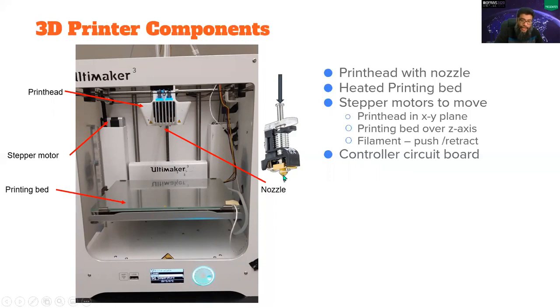The printing starts when the bed is at the top, very near to the nozzle. Layer one is printed, then the bed goes a bit down and second layer is printed, then the third layer and so on. So this 3D printing is basically a layer by layer printing.